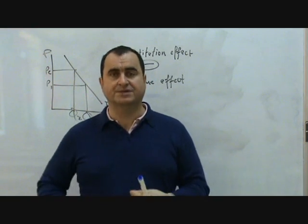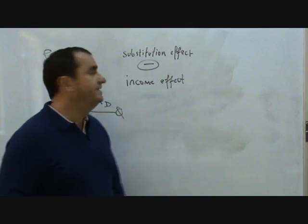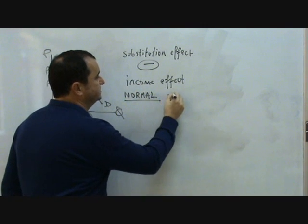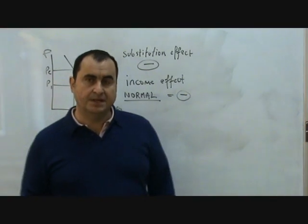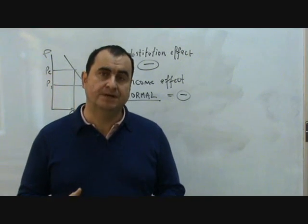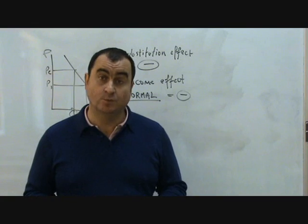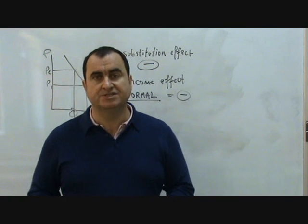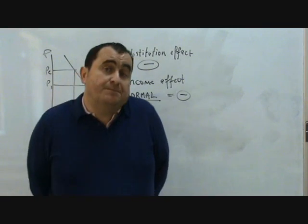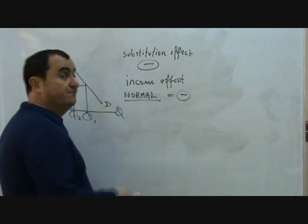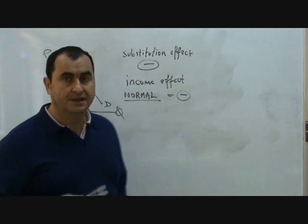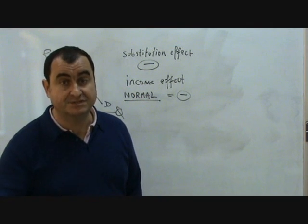Also occurring is the income effect, and the income effect for normal goods is also negative, meaning that when the price of a good rises, the real income of a consumer has fallen. They can't buy what they used to buy with their wage, and so as their real income falls they buy less of the normal good. So for most goods, when the price goes up, for both the substitution effect and the income effect, less is bought.